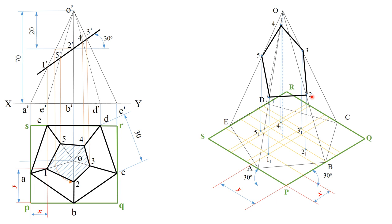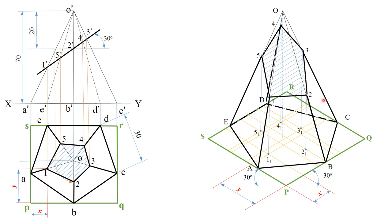Connect all section points with a darker pencil and highlight the remaining solid. Hatch the sectioned area — this gives the isometric view of the truncated pyramid. If you want to make it an isometric projection rather than an isometric view, multiply all transferred dimensions by 0.82 when transferring points onto the isometric view. Thank you.